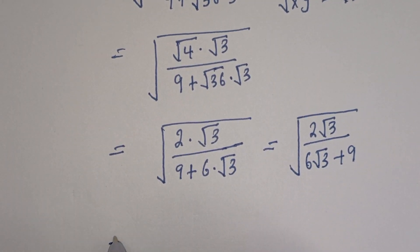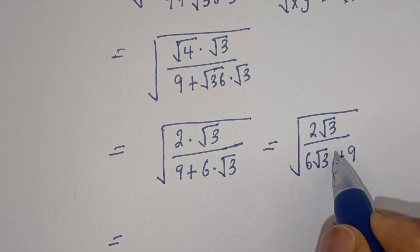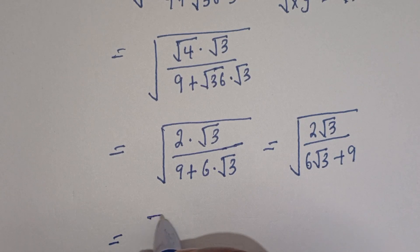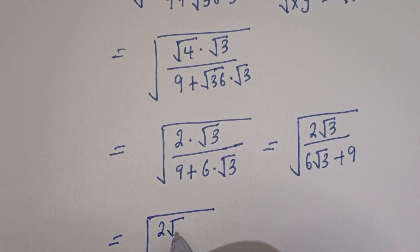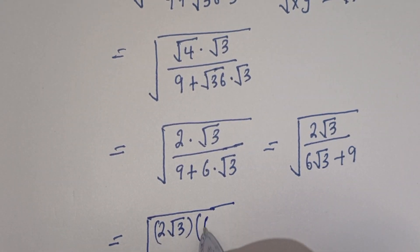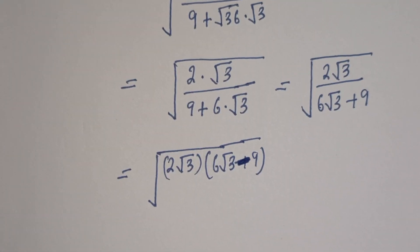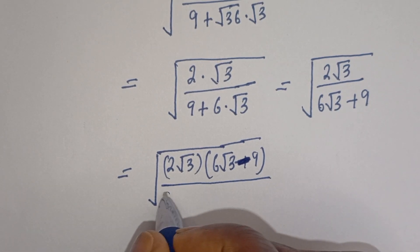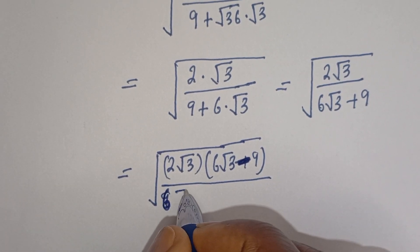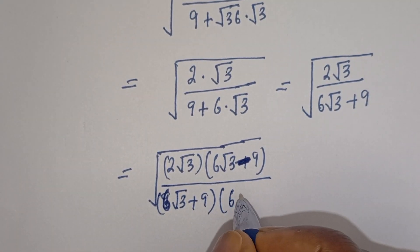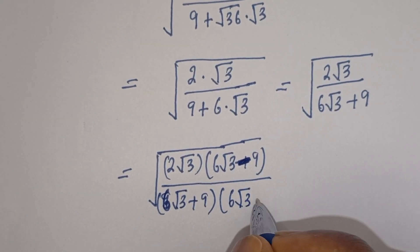This is equal to — we can now rationalize this by multiplying the numerator and denominator by the conjugate of the denominator, that is we multiply by 6 root 3 minus 9, over 6 root 3 minus 9.